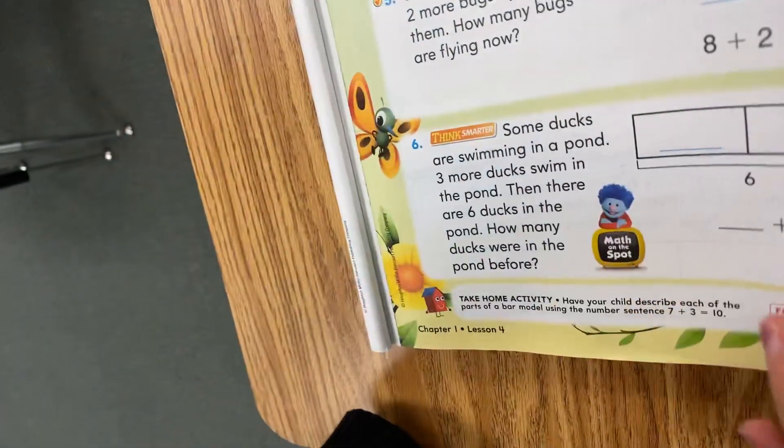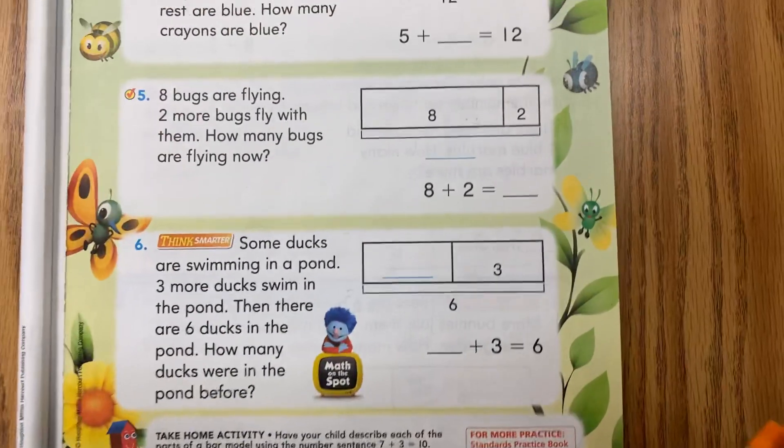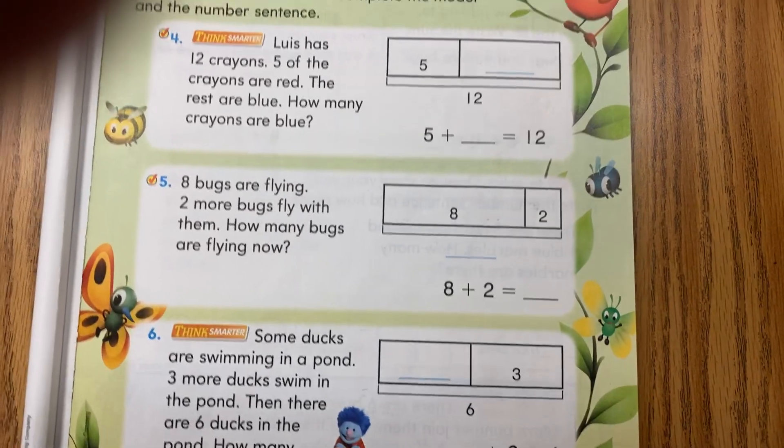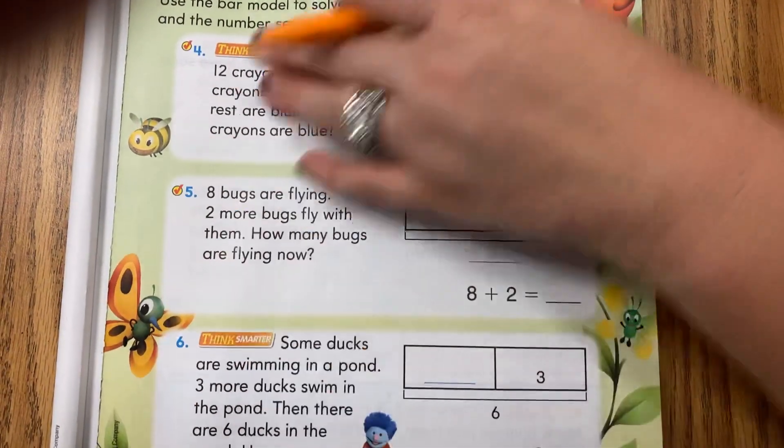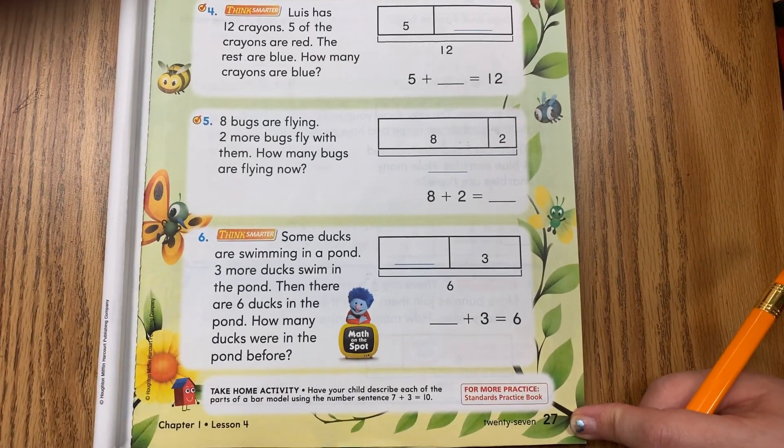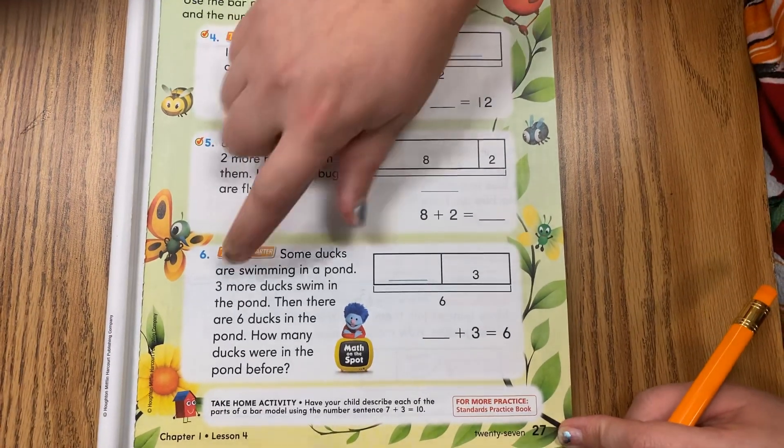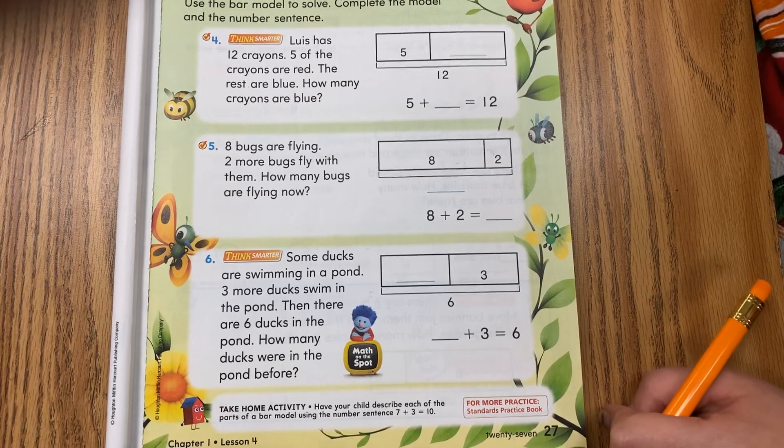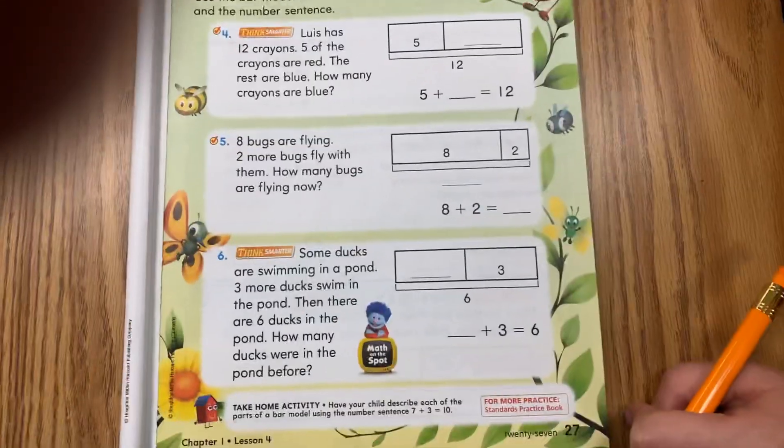All right, guys, ready? There's a couple more. Do you think you can do it? All right, give them a shot, and this page is going to be what you submit to us today. So page 27 from your workbook, numbers four, five, and six—those are your homework for today. Best of luck. Bye!